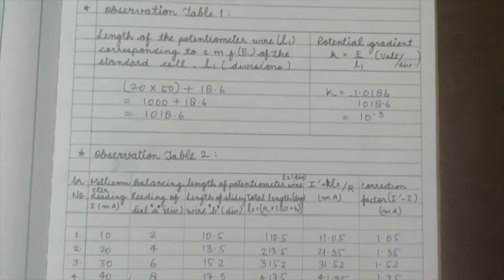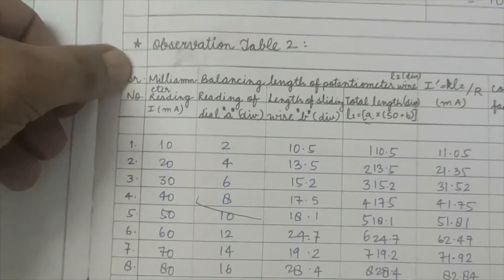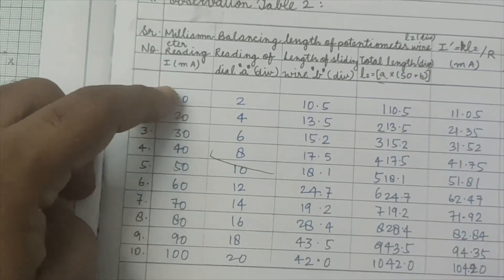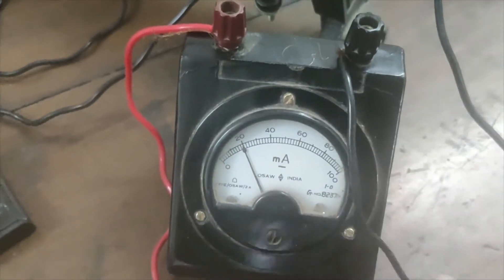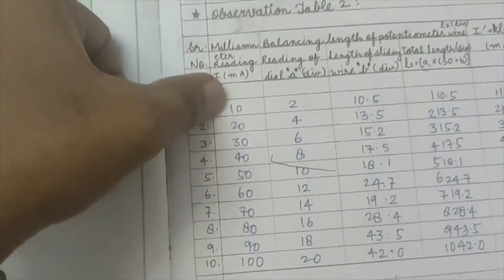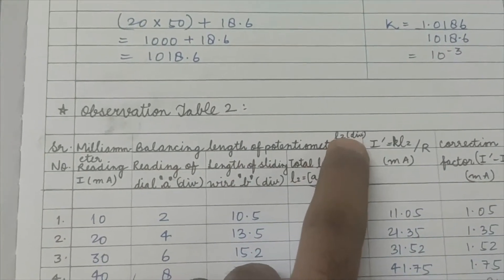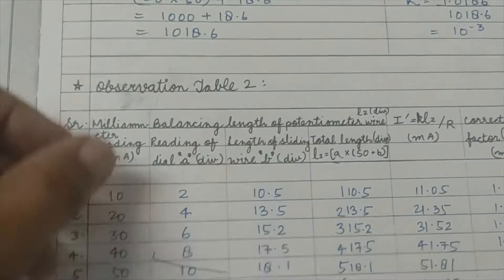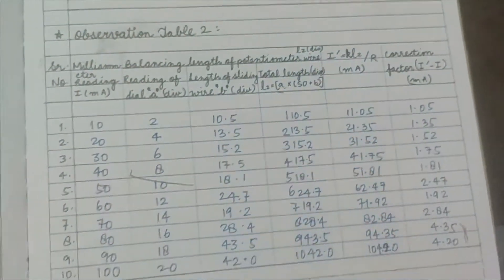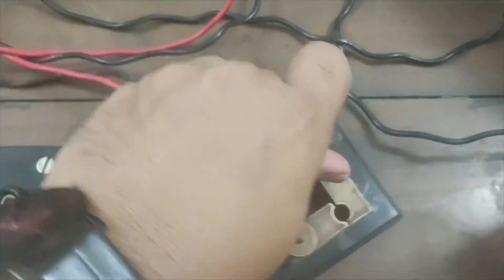For calibration, the observation table has serial numbers and milliammeter readings. We will vary the milliammeter from 10, 20, 30, 40 up to 200 milliamperes using the rheostat, since the range of the milliammeter is 0 to 200. For each reading, we find the balancing length L2 on the potentiometer.